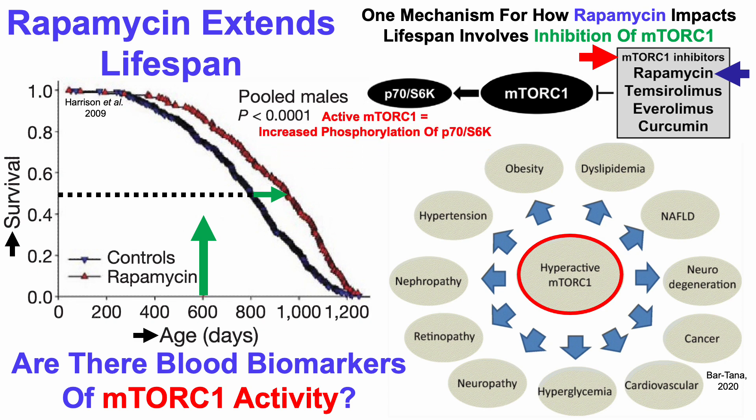When mTORC1 is active, there is an increased phosphorylation of P70S6K, as shown here with that phosphorylation group (PO4). So now we can get more specific with our question of blood biomarkers of mTORC1 activity: are any blood biomarkers related to phosphorylated levels of P70S6K?